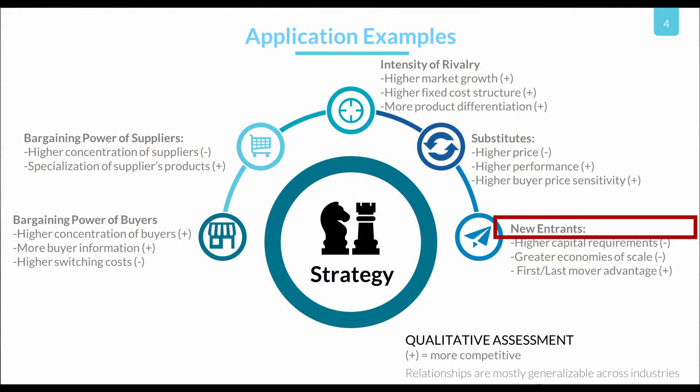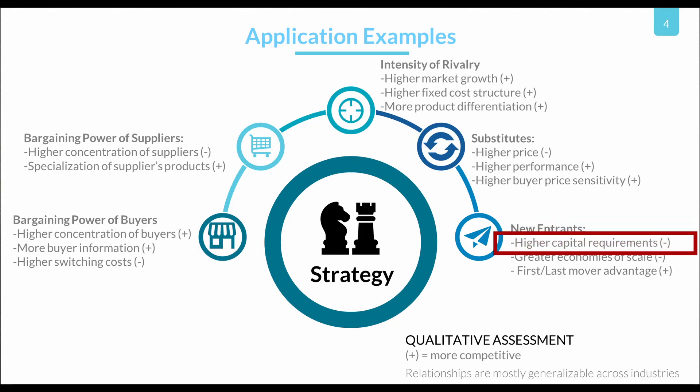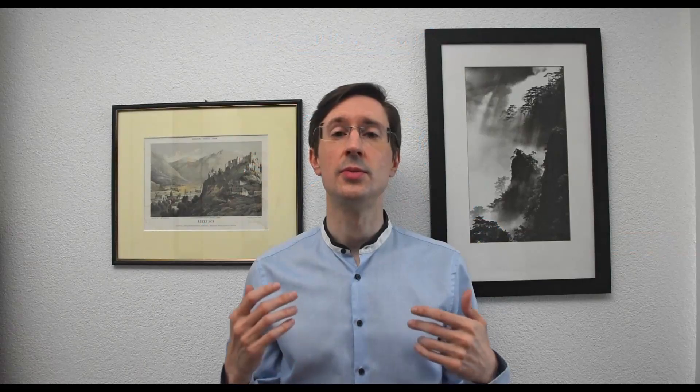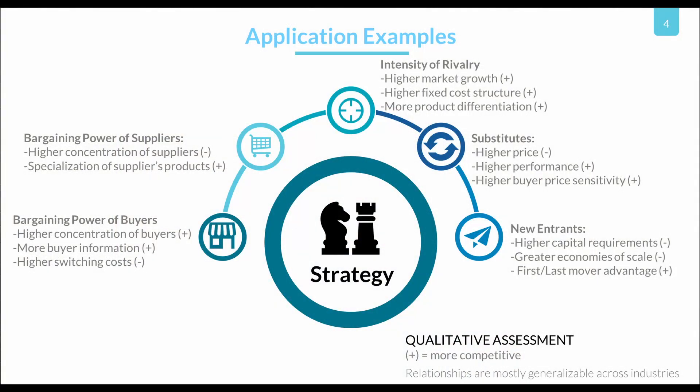New entrants to an industry are simply more competition. However, the threat is mitigated by high capital requirements, which make it less likely that new firms will enter the industry. In a full analysis, you would evaluate each force and its drivers to get a qualitative assessment of the intensity of industry rivalry, which should be an indicator of industry profitability. The assumption is that the higher the rivalry, the lower the industry profits. In another video, I will talk about the empirical support for this assumption — whether there is evidence that this competitiveness-profitability assumption holds in reality.